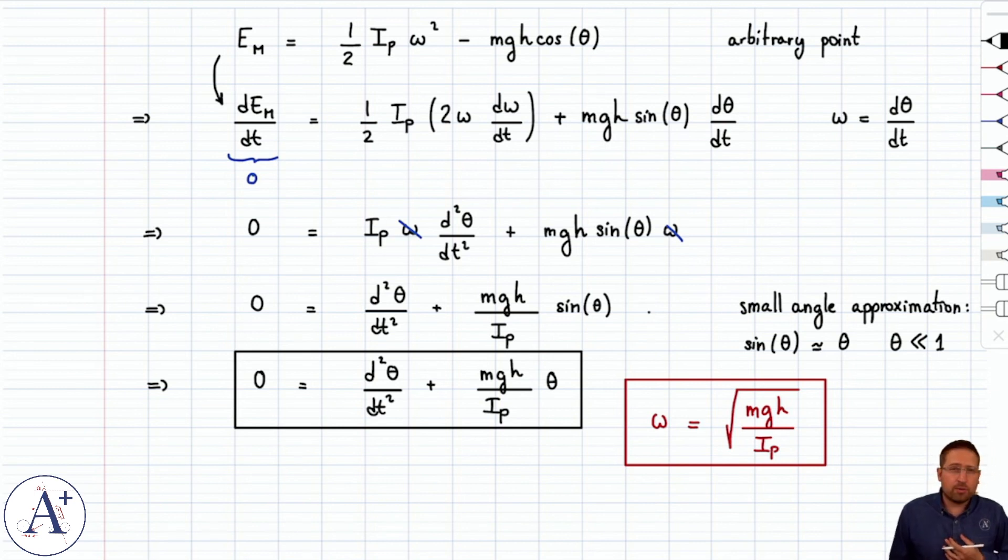So, all in all, pretty similar to the simple pendulum, and we get the differential equation that we had derived previously for the physical pendulum by applying torque net equals i alpha.